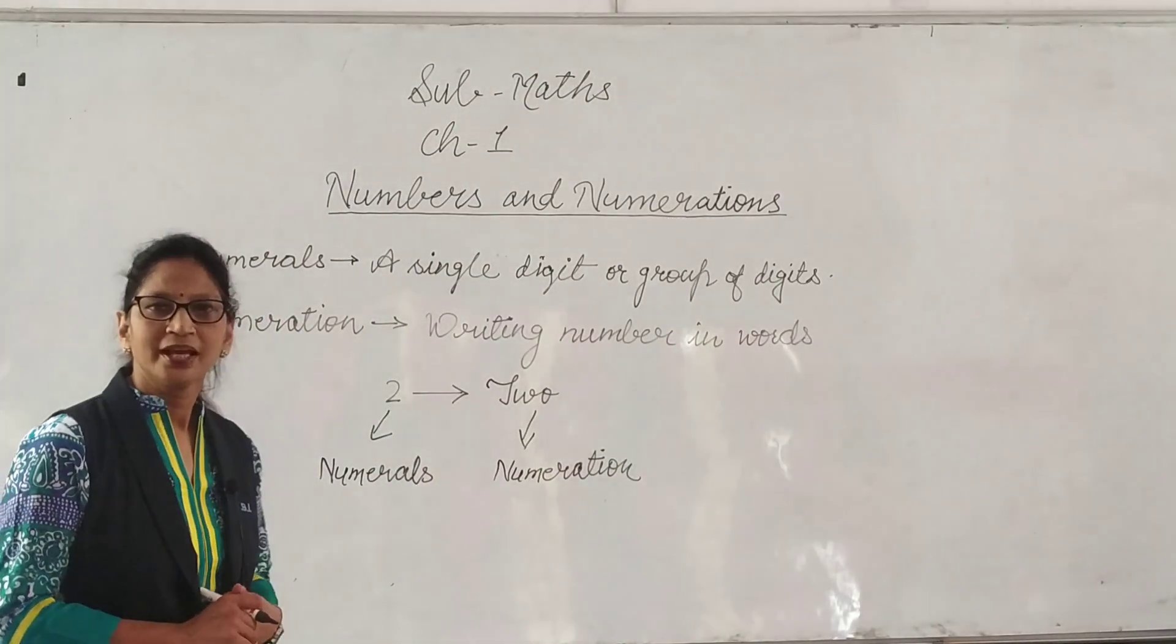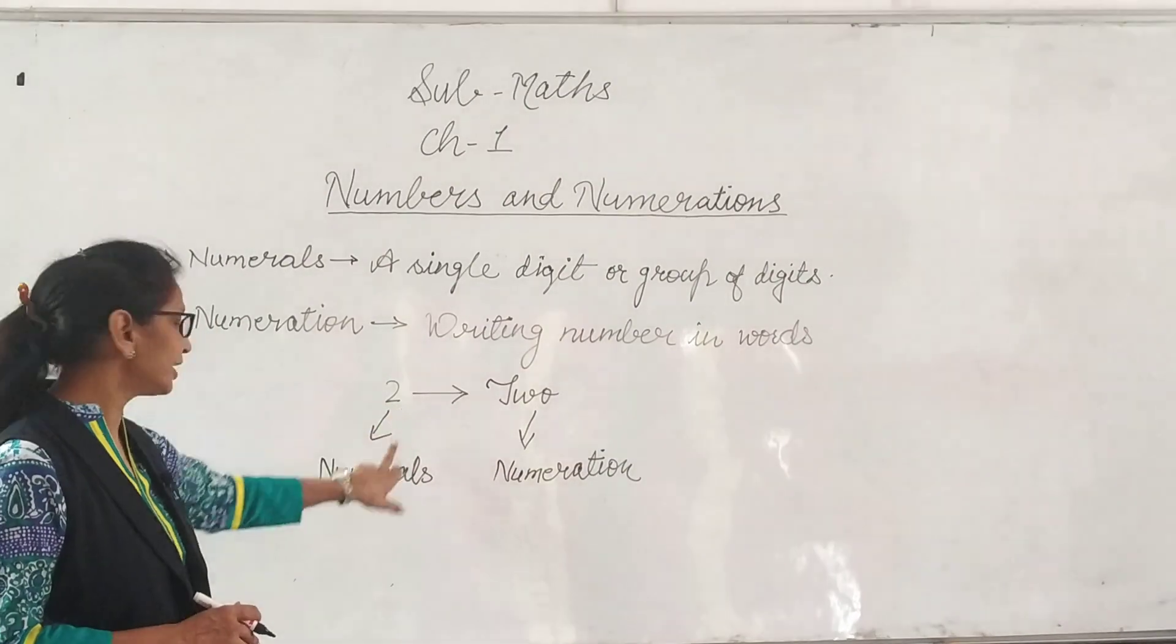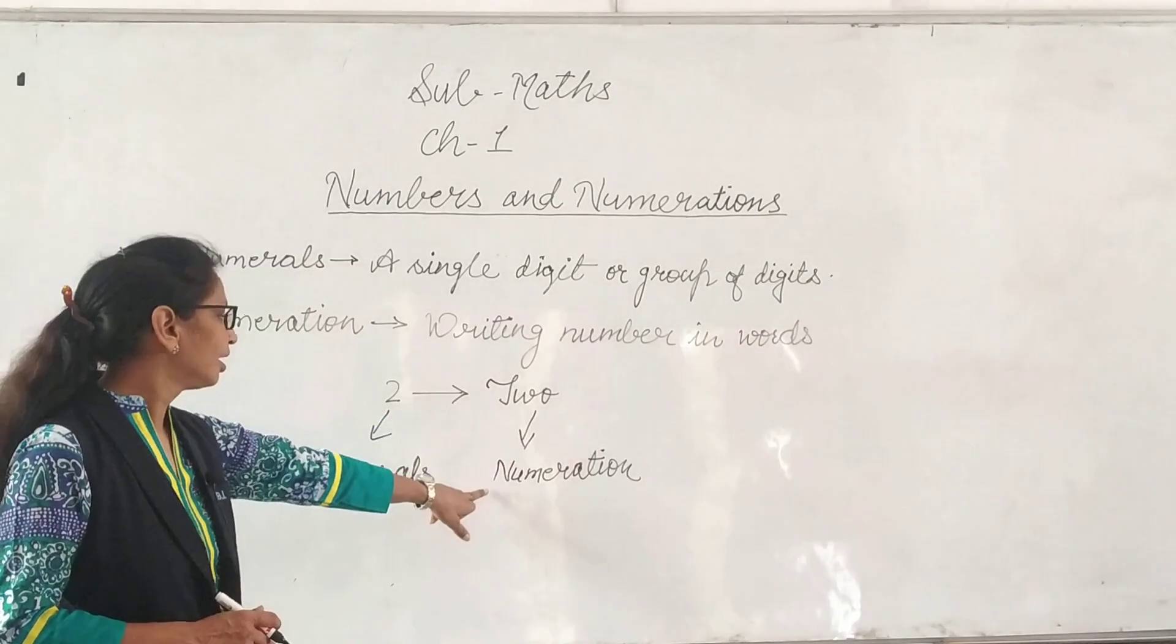Next, numeration. Writing numbers in words are called numeration. That is 2. 2 is numeral and T-W-O, 2 means numeration.